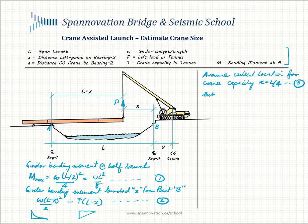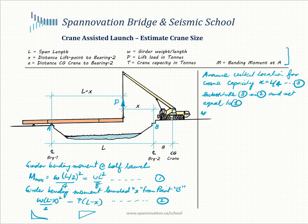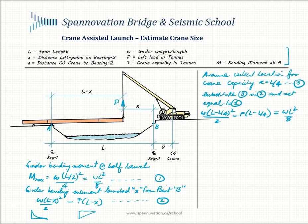Now we'll set up a condition by substituting equation 3 into equation 2 and setting it equal to equation 1. In other words, the net moment in the girder system cannot be greater than M max. That gives us: w(L − L/4)² / 2 − P(L − L/4) ≤ M max. The limiting condition is set equal to M max, which is wL² over 8.